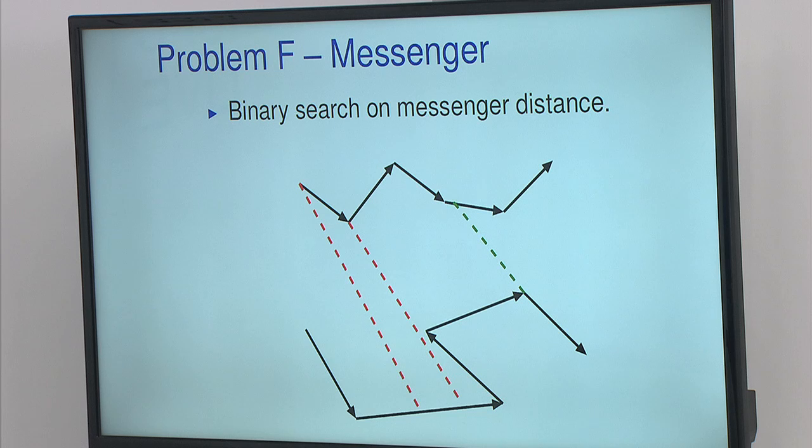If this distance is too big, then it's impossible for him to get there, and so this value is impossible. And if it's small enough, then it's possible to actually get the message within that time.